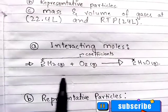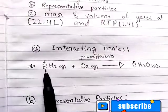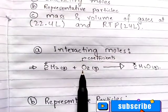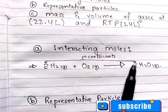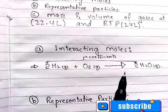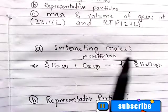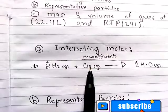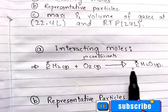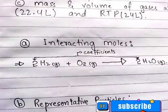These are the substrates and these are the products. Look at this: two moles of H₂ and one mole of oxygen react to give two moles of water. From the interacting moles, we can find out the mole ratios — two moles of H₂, one mole of O₂, two moles of H₂O.